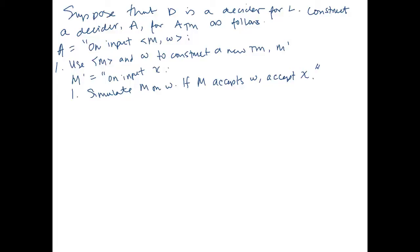Let's double check. M′'s language is going to be infinite — it's going to accept any string it gets — if M accepts W. If M does not accept W, then it accepts nothing. We have no step to accept the input unless M accepts W, so if M does not accept W, then its language is empty with size zero. Notice: we are not going to ever run M′; we are just going to feed its description to the decider.